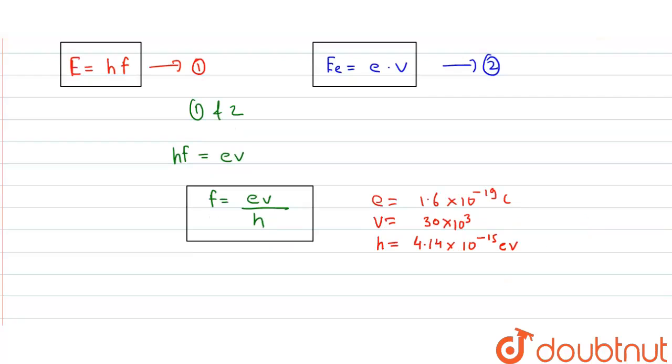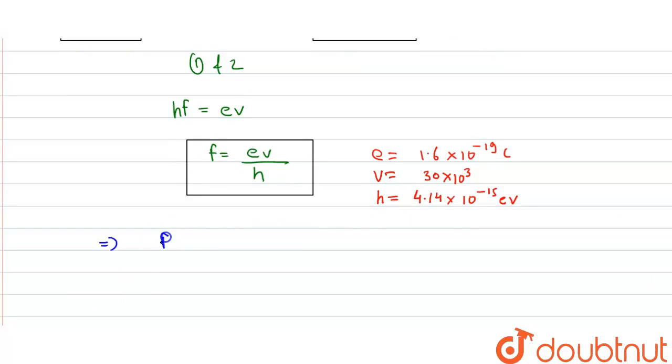Now we'll substitute all values into our frequency equation. f = (1.6 × 10^-19) × (30 × 10^3) / h.